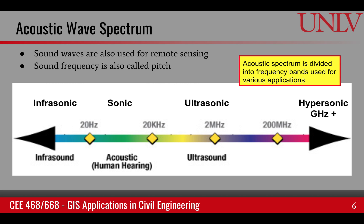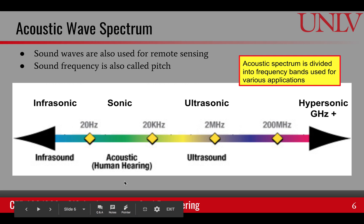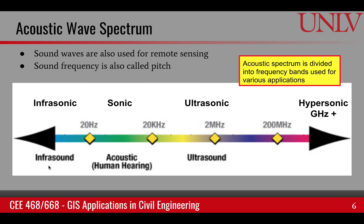Similarly, the acoustic wave spectrum is also used for various technologies. It is divided into regions based on our ability to hear: the sonic range is between 20 hertz and 20 kilohertz. Anything below 20 hertz is infrasound; anything between 20 kilohertz and gigahertz is ultrasonic; and in the gigahertz range it's called hypersonic. Acoustic frequencies are also used for remote sensing.